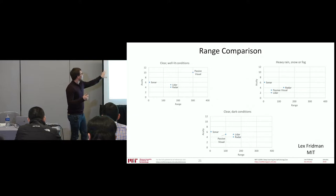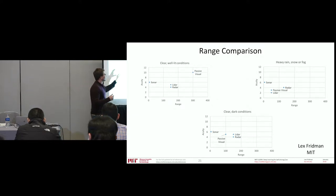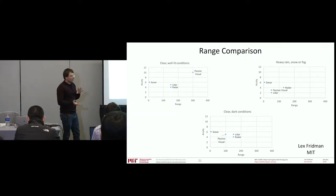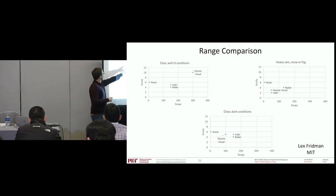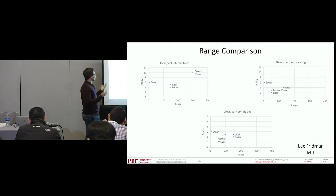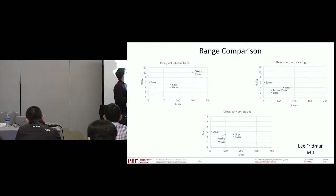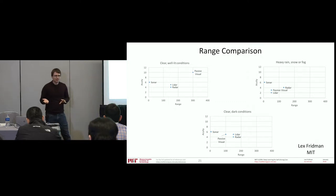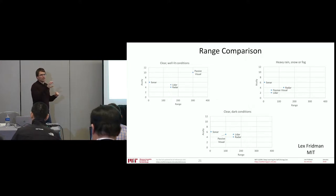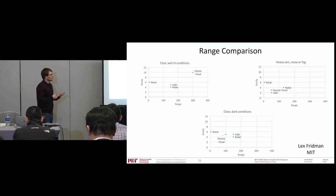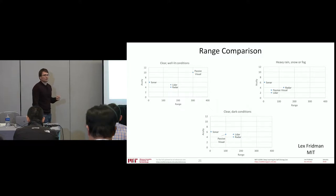Another way to break this down is clear well-lit conditions versus heavy rain or fog versus clear dark conditions — that really changes the balance of capabilities. In clear, well-lit conditions cameras are great: they can see far with high acuity. But cameras really struggle in rain, snow, or fog. You can mitigate that — fog lights help a little, having a camera inside the windshield with wipers helps — but out of the box, it doesn't take more than a San Francisco foggy morning to make a camera struggle significantly.